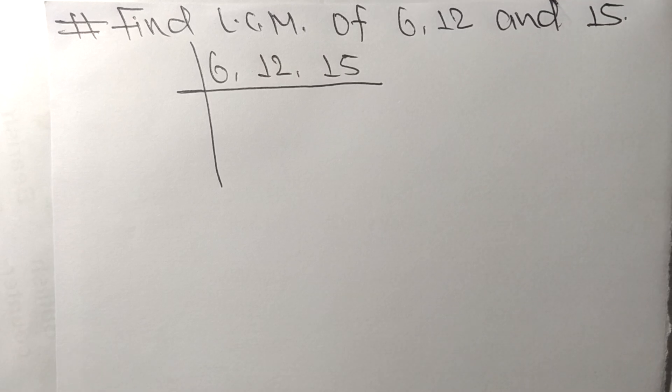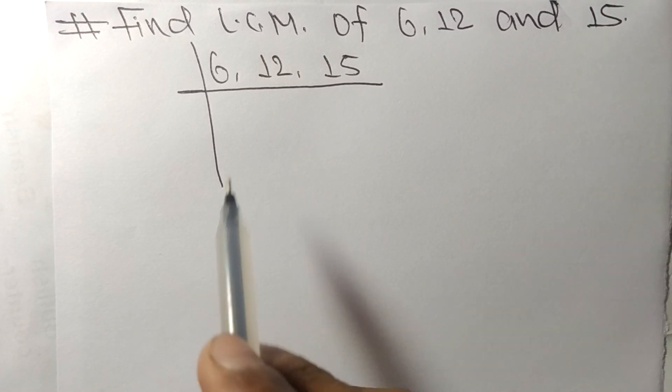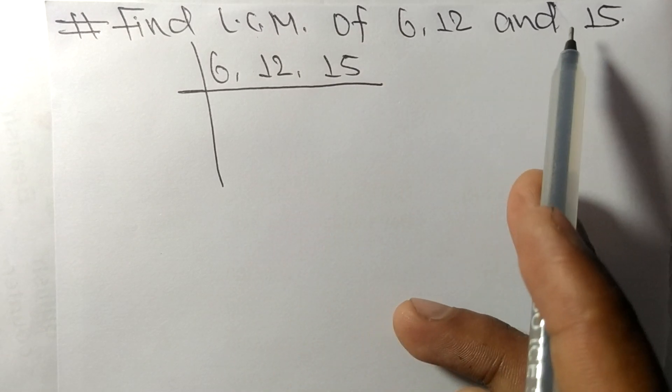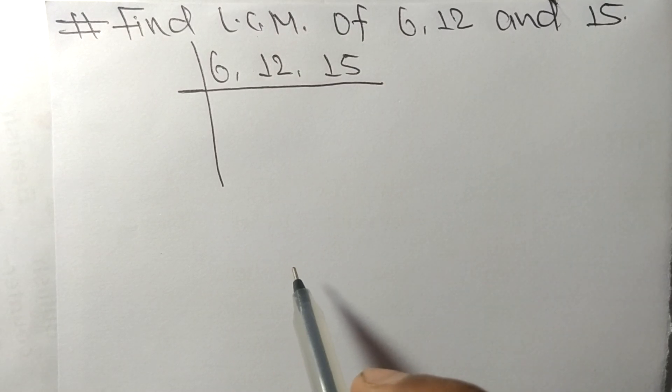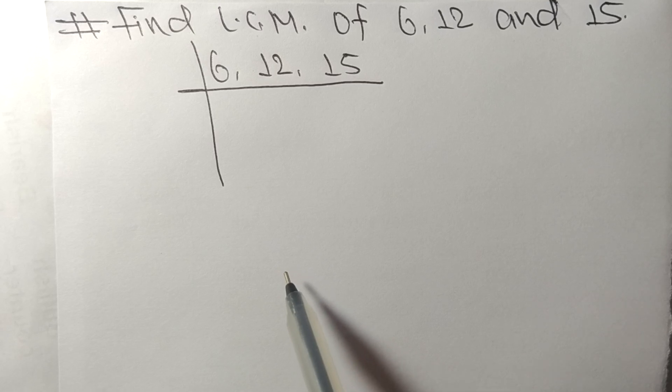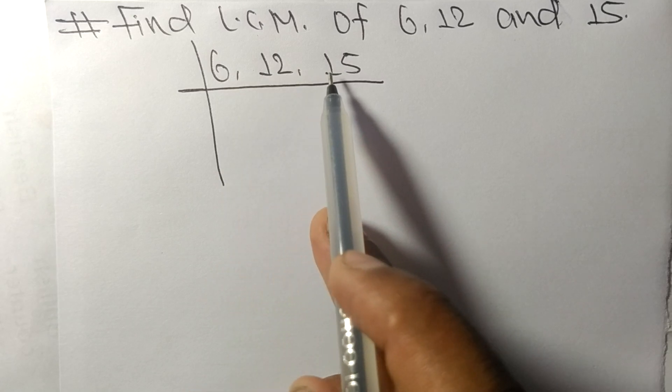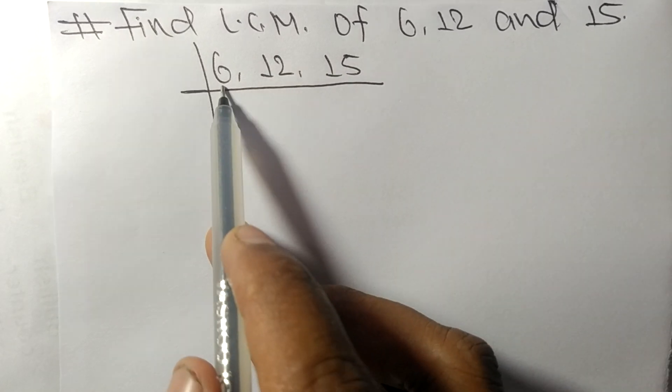Today in this video we shall learn to find the LCM of 6, 12, and 15. To find the LCM, we have to choose the lowest number that can exactly divide any two of these numbers. So 6 and 12 are exactly divisible by 2.